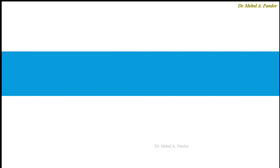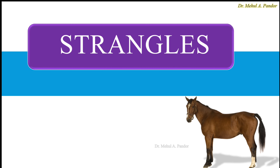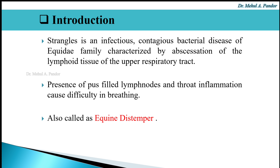Hello everyone, today we are going to discuss the very important disease of horses that is strangles. Strangles is an infectious, contagious bacterial disease of the Equidae family, characterized by abscessation of the lymphoid tissue of the upper respiratory tract. The presence of abscessed lymph nodes and throat inflammation cause difficulty in breathing. Strangles is also known as equine distemper.